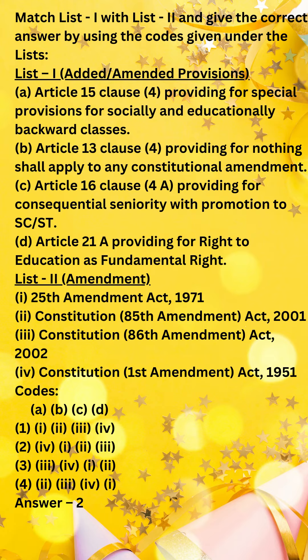Article 21A was added in Part 3 by the Constitution 86th Amendment Act 2002, and stated that every child has a right to full-time elementary education of satisfactory and equitable quality in a formal school which satisfies certain essential norms and standards.